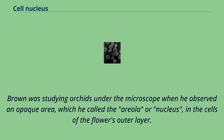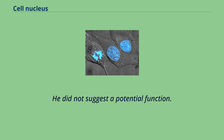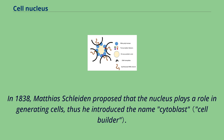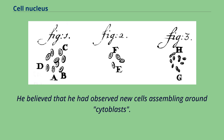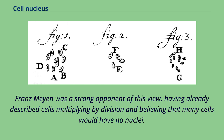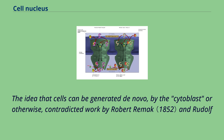In 1838, Matthias Schleiden proposed that the nucleus plays a role in generating cells, thus he introduced the name cytoblast. He believed that he had observed new cells assembling around cytoblasts. Franz Meyen was a strong opponent of this view, having already described cells multiplying by division and believing that many cells would have no nuclei. The idea that cells can be generated de novo by the cytoblast or otherwise contradicted work by Robert Remak and Rudolf Virchow, who decisively propagated the new paradigm that cells are generated solely by cells. The function of the nucleus remained unclear.